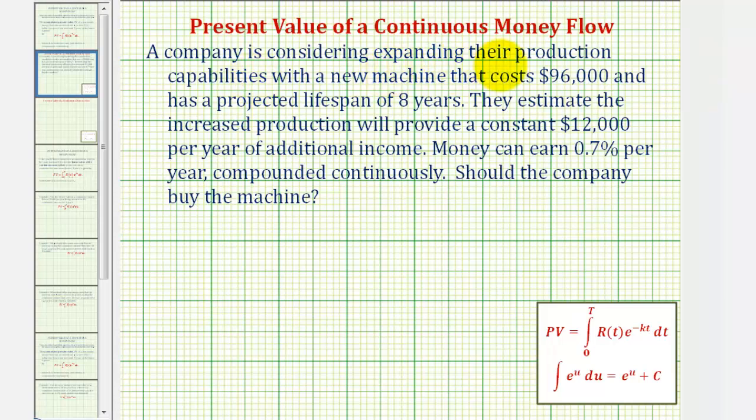A company is considering expanding their production capacities with a new machine that costs $96,000 and has a projected lifespan of eight years. They estimate the increased production will provide a constant $12,000 per year of additional income. Money can earn 0.7% per year compounded continuously. Should the company buy the machine?